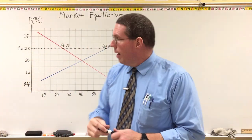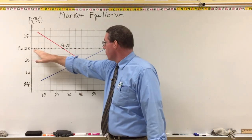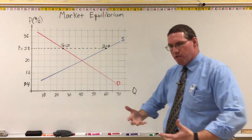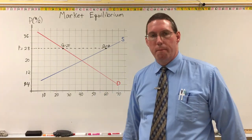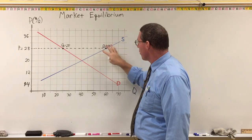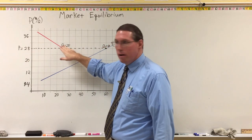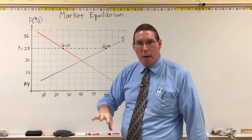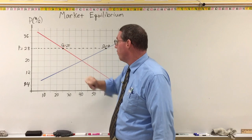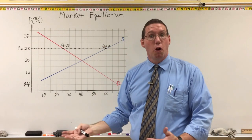The question is: how much is actually going to be exchanged when the price is $28? The sellers are willing to make 60 units and the buyers are willing to buy 25. If sellers show up with 60 units and the buyers say they only want 25, the sellers are not going to sell all 60 — they'll have some left over. Only 25 of the 60 will actually be sold.